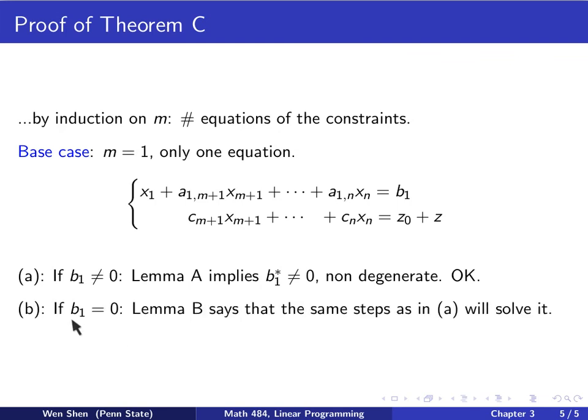Now, the second case is b1 equals zero. Then, we are in the degenerate case. Then, we can apply lemma B. Lemma B says that if you have a procedure for case, little case a, then the same procedure can be used when you put the right-hand side to be zero to conclude the same result, to conclude the result. The same procedure. So, that is also okay. So, this concludes that for case m equal 1 as a base of the induction, our statement holds.